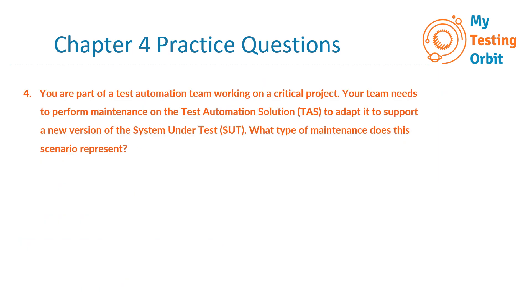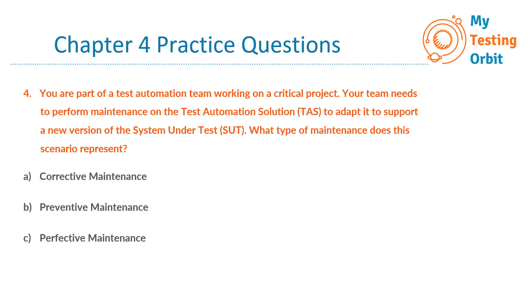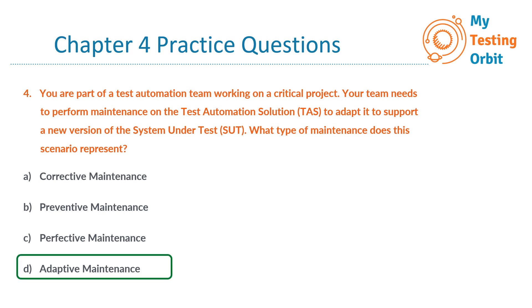Question 4: You are part of a test automation team working on a critical project. Your team needs to perform maintenance on the TAS to adapt it to support a new version of the SUT. What type of maintenance does this scenario represent? A. Corrective maintenance. B. Preventive maintenance. C. Perfective maintenance. Or D. Adaptive maintenance. The correct answer is D, Adaptive maintenance. The TAS needs to be adapted to support a new version of the SUT, which aligns with adaptive maintenance. Option A, corrective maintenance, involves fixing failures. Option B, preventive maintenance, aims to support more test types. And option C, perfective maintenance, focuses on optimization and non-functional issues.